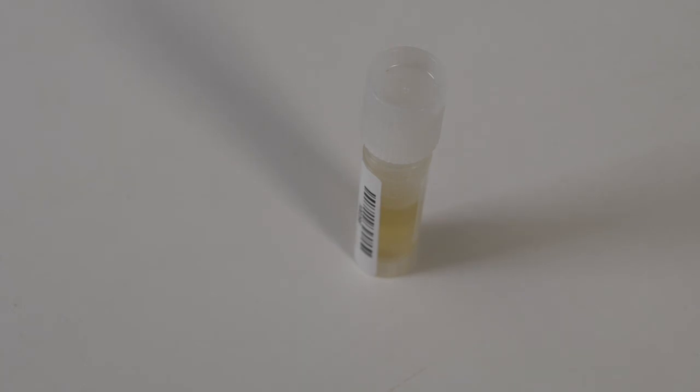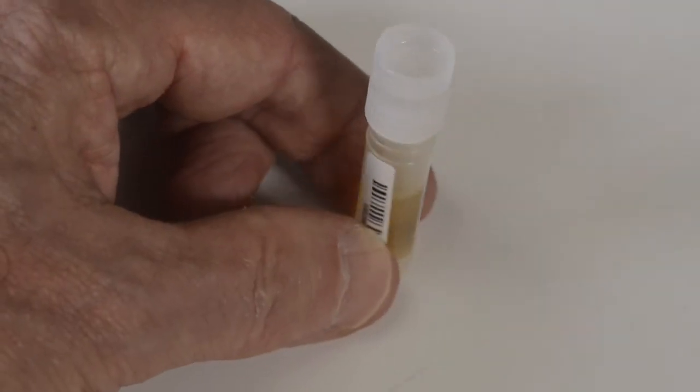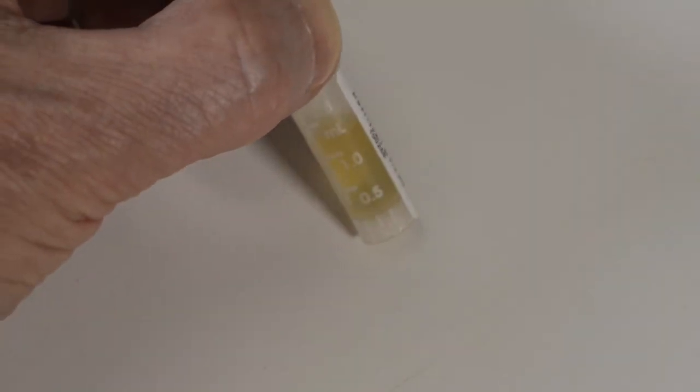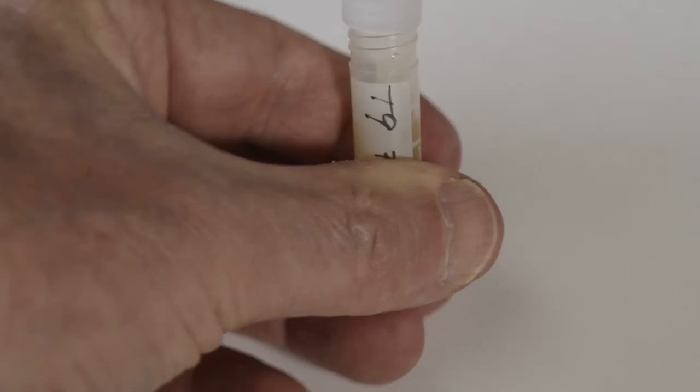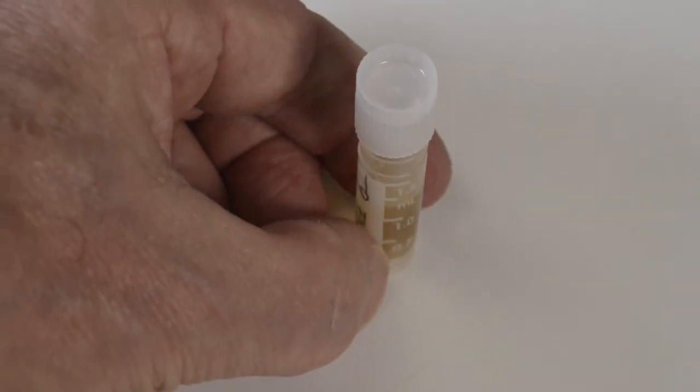Here you see a close-up view of the small 2 milliliter tube for making the stab cultures. Your instructor will provide you with these tubes. They'll have a barcode on them, also a labeling area. You should clearly mark the name of your sample on the tube.